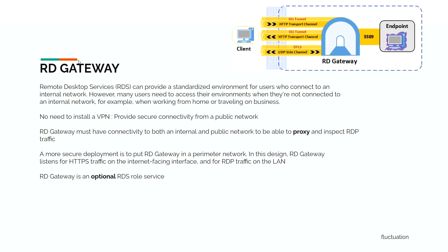The RD Gateway allows users who are not connected to the internal network — such as those working from home or traveling — to access their environment without a VPN. It provides a secure connection from public networks. The RD Gateway must have connectivity to both internal and public networks to proxy and inspect RDP traffic. A more secure deployment places the RD Gateway in a perimeter network, where it listens for HTTPS traffic on the internet-facing interface and for RDP traffic on the LAN. The RD Gateway is optional, and it tunnels traffic using HTTPS with port 3389 internally.